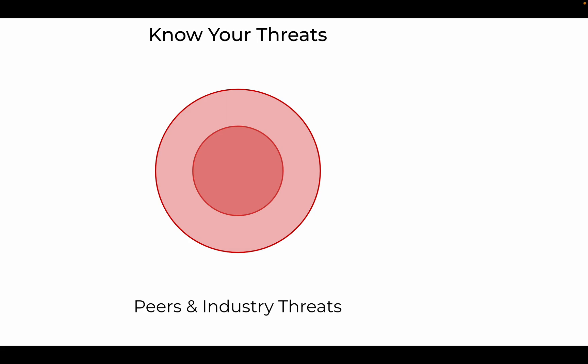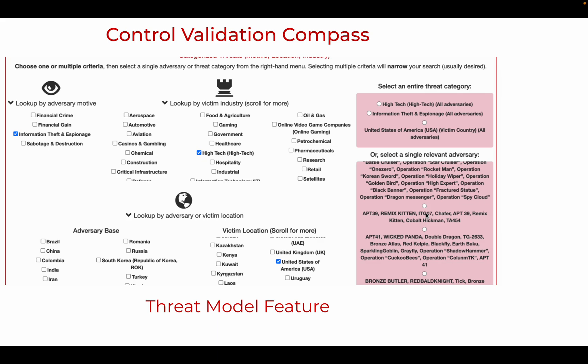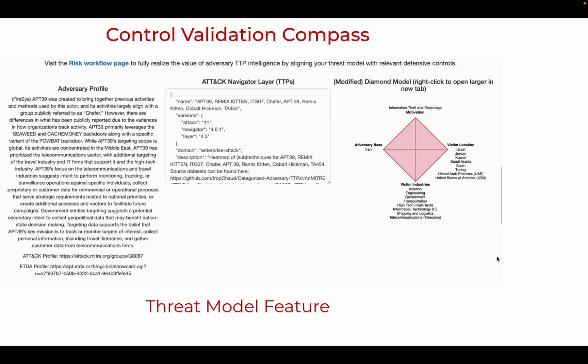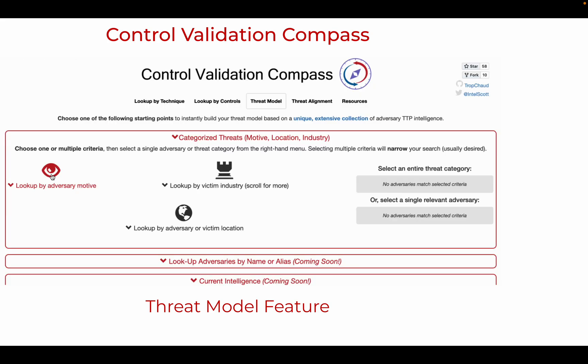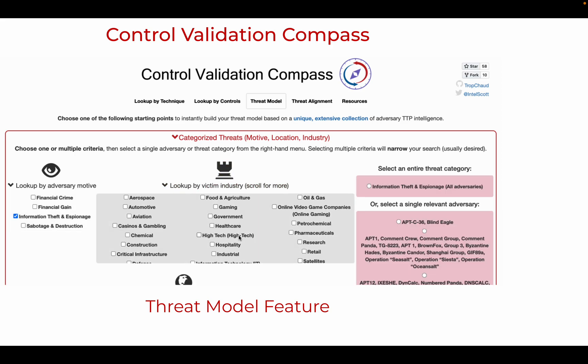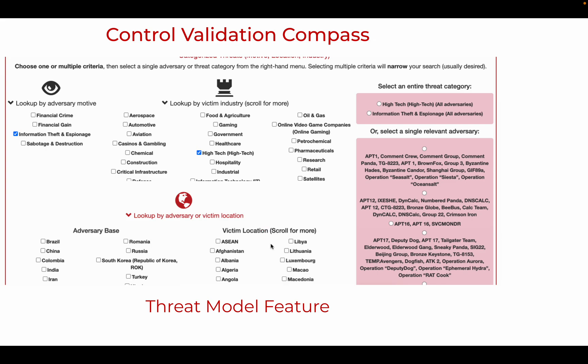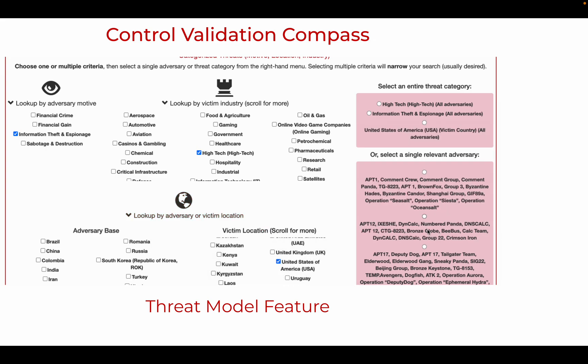Threats affecting immediate industry peers — organizations that most closely resemble one's own — may receive slightly higher scores. Privileged circle information sharing, such as through ISACs, is a key source that often informs this category of threats. Searching publicly reported incidents for threats affecting a given industry can also be valuable.